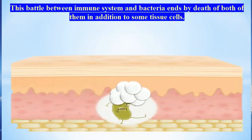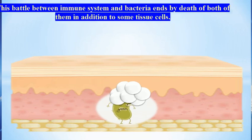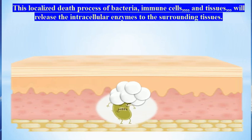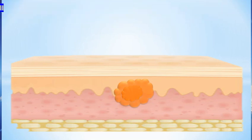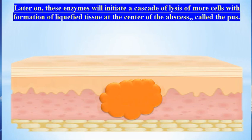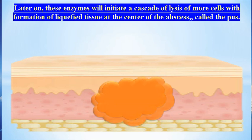This battle between the immune system and bacteria ends by the death of both of them, in addition to some tissue cells. This localized death process releases intracellular enzymes to the surrounding tissues, which then initiate a cascade of lysis of more cells, forming liquefied tissue at the center of the abscess — called the pus.